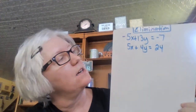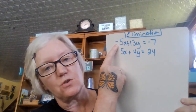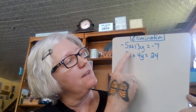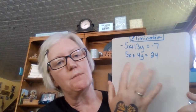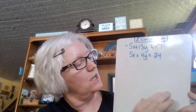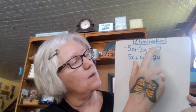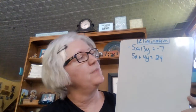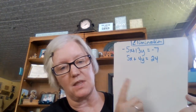We're going to call it a modified standard form because in order to be in true standard form, the coefficient can't be negative. So technically, negative 5x plus 13y equals negative 7 is not in true standard form, but we'll call it modified standard form. You use elimination if both equations have the x term, then the y term, then the equals, then the constant. The goal is to get the same coefficients on one of the variables with opposite signs.